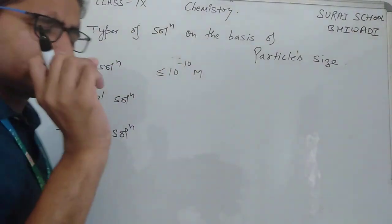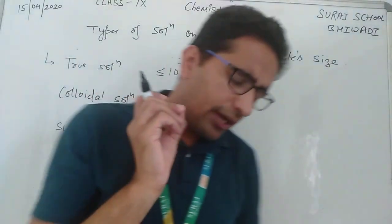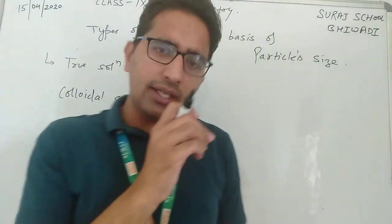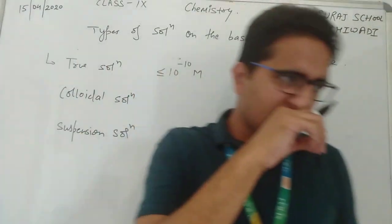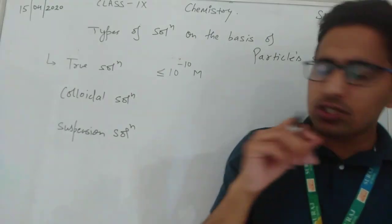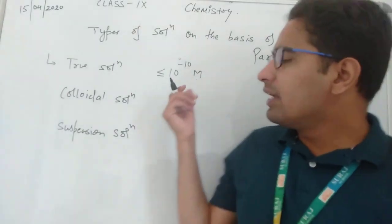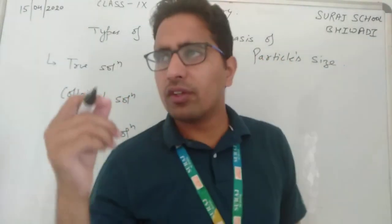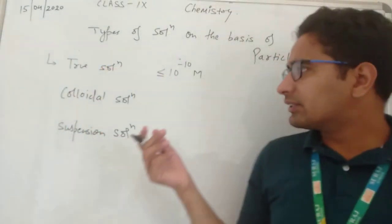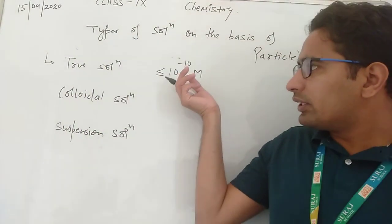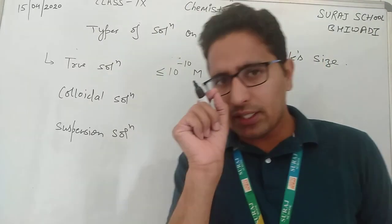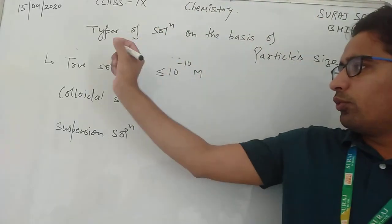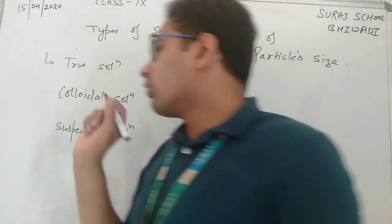जब particle का size 10⁻¹⁰ meter या उससे छोटा होता है, तो बहुत ज़्यादा छोटा होने की वजह से हम उसे देख नहीं सकते। इतना छोटा size होता है कि वो naked eye से visible नहीं होता, इसको हम true solution कहते हैं।